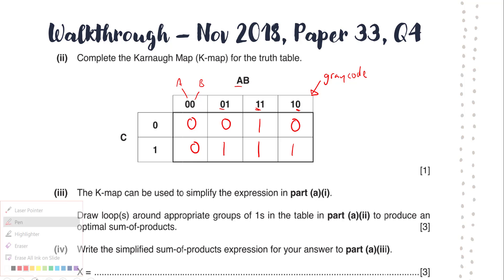Now we come to part three, which is we need to create an optimal sum of products. Now, we draw one or more loops around appropriate groups of ones. A couple of things to note here. The number of loops that we create is known to us by the number of marks available for the task. One loop, one mark. Appropriate groups of ones, well, how many ones we have in a loop has to be a number that's power of two.